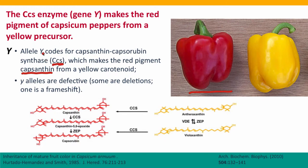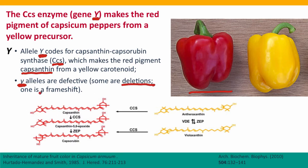The gene encoding CCS is commonly referred to as gene Y. It's known in two alleles: the capital Y allele encodes a functional protein, which makes the red pigment from a precursor — a yellow pigment substrate — converting it into the red product. The gene also has a defective allele called little y. There are actually several different defective alleles, all called little y because they're all defective. Some are deletions; one is known to be a frameshift. But they all fail to produce a functional protein, and as a result, the yellow peppers you buy in the supermarket are yellow because they can't convert the yellow pigment into a red pigment.